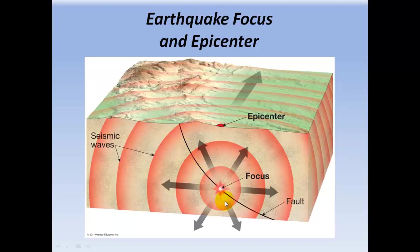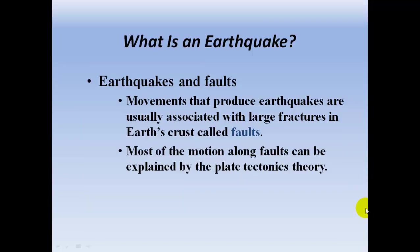Here we have a fault, and here's where the earthquake occurred — that's the focus. Energy travels in all directions, 360 degrees all the way around like a sphere. These are seismic waves that travel out. The point on the land surface right above the focus is the epicenter of the earthquake.